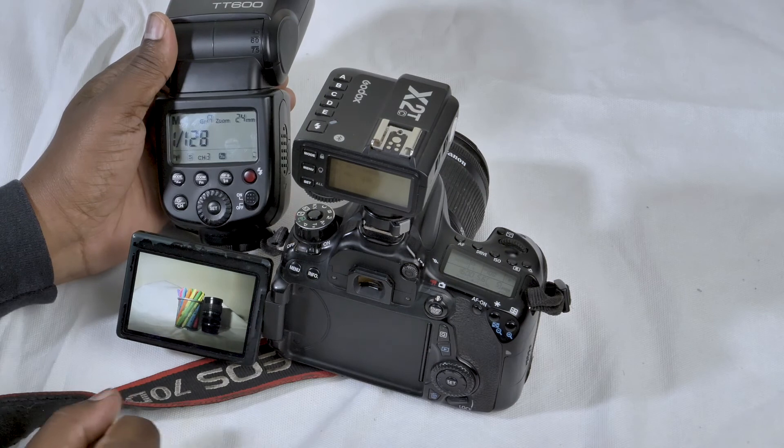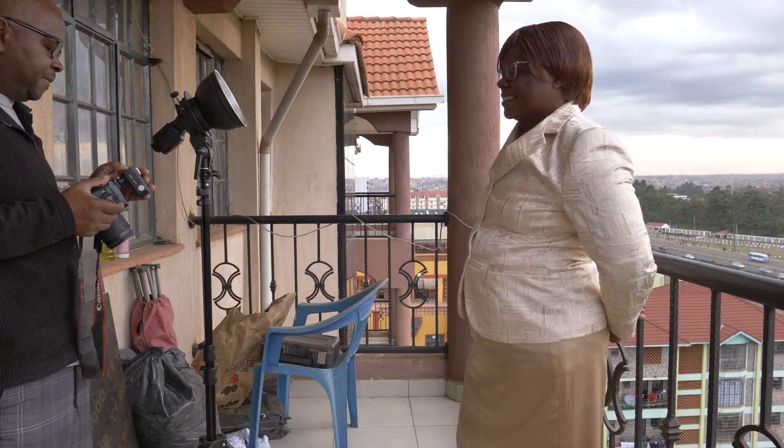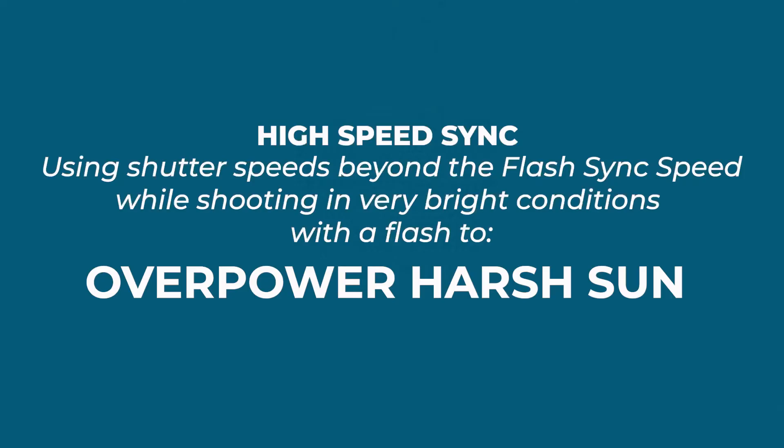So when would you use high speed sync mode? One scenario where it's very useful is when you are shooting in very bright conditions — like during midday in bright sun, or shooting with the sun behind your subject. In that scenario, you want to make sure your background is not overexposed and your foreground is well exposed, balancing a very bright background with your foreground. Some call it overpowering the sun.